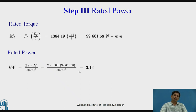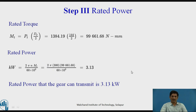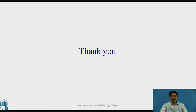Rated power is calculated as kW = (2π × n × mt) / (60 × 10⁶). The power comes out to be 3.13 kW. Hence, the rated power that the gear can transmit is 3.13 kW. Thank you.